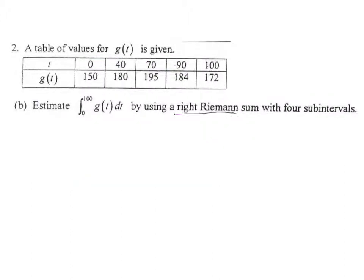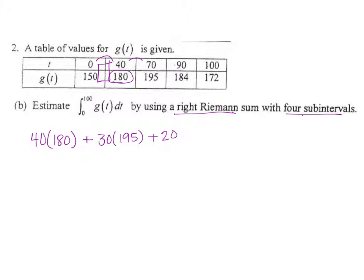Now we do the right Riemann sum with four subintervals. Very similar to the previous, our widths remain the same, but we use the right side for the length of each rectangle. So: 40 times 180, plus 30 times 195, plus 20 times 184, and finally 10 times 172. Number crunching that gives 18,450.